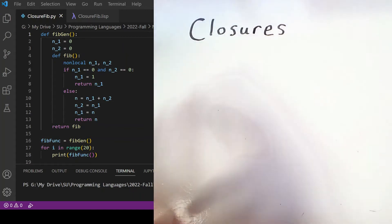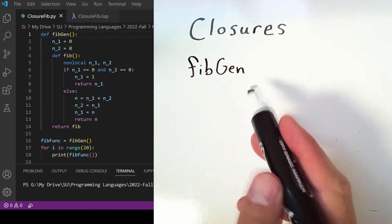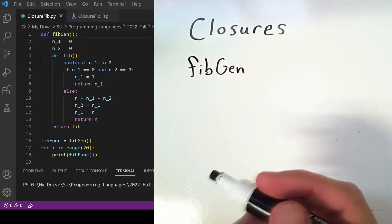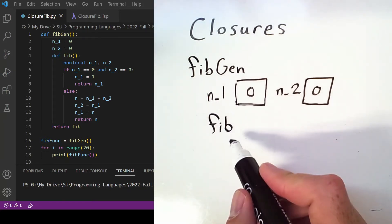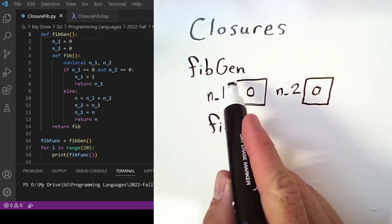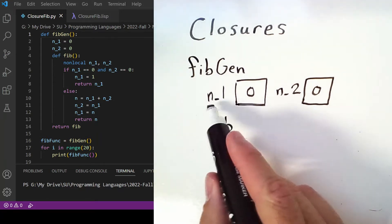This video will be about closures, and rather than start with a definition, I'm going to start with an example. In the Python code on the left, we have the function fibgen that defines two local variables. A nested subprogram fib is defined inside of fibgen and it has non-local access to n1 and n2.